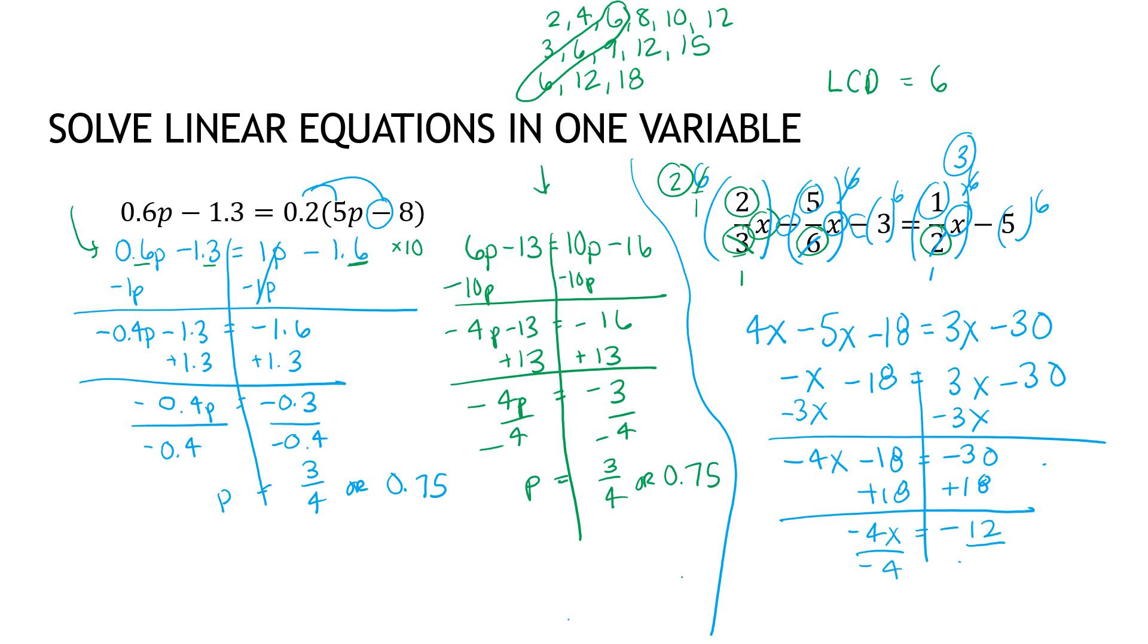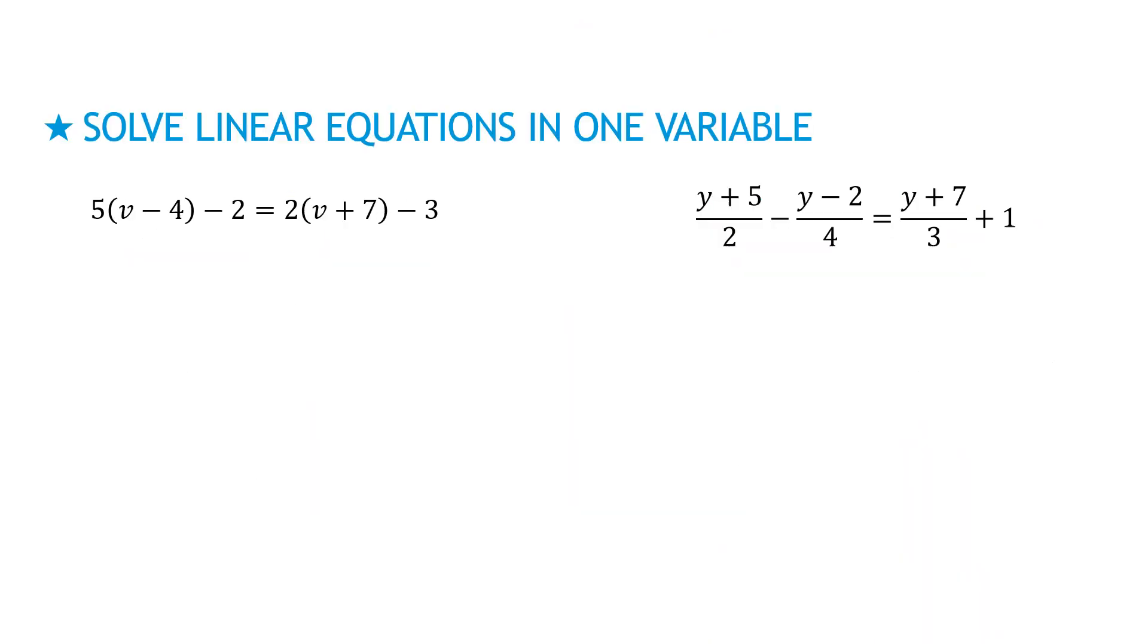I'm adding 18 to each side to give me negative 4x and negative 12. When I divide negative 4 by negative 12, I get positive 3. Keep in mind, on any of these, I can take my final answer and plug it back in to verify that each side of the equation is equal to the other side.